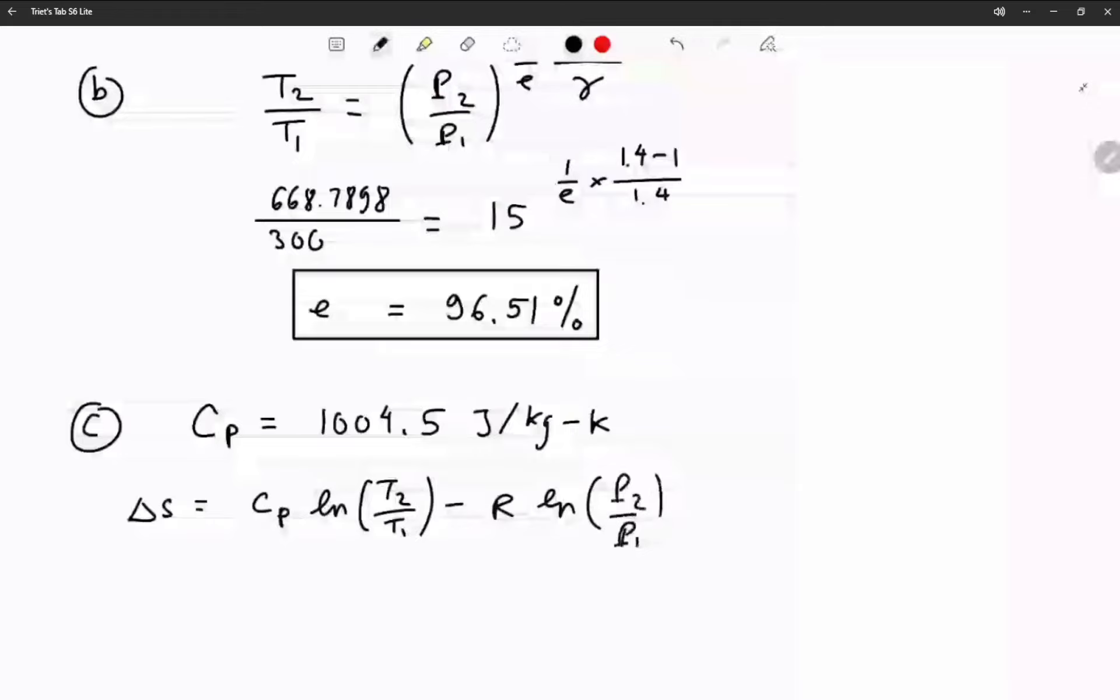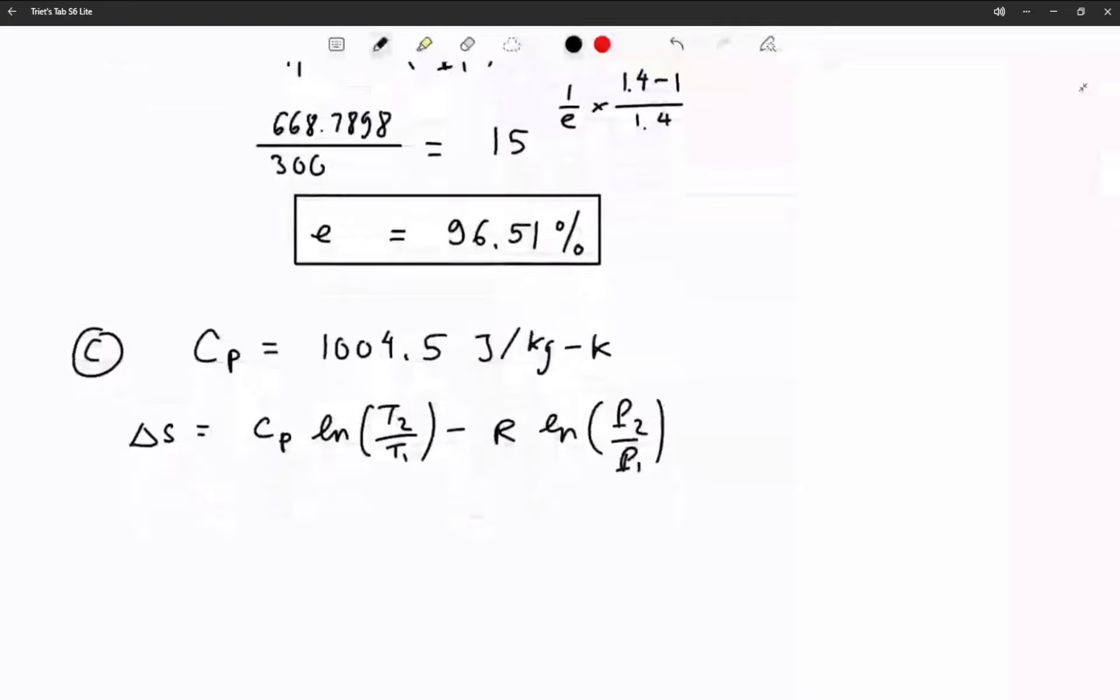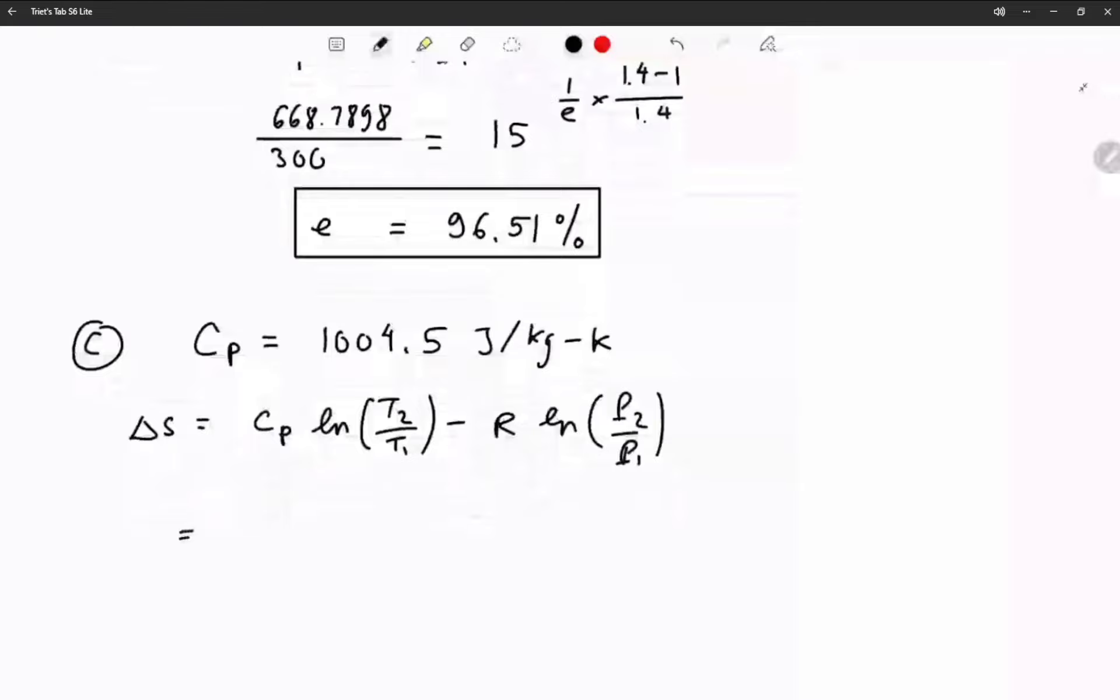Here you're gonna have 1004.5 joules per kilogram K, ln 668.7898 divided by 300, minus 287 joules per kilogram K...